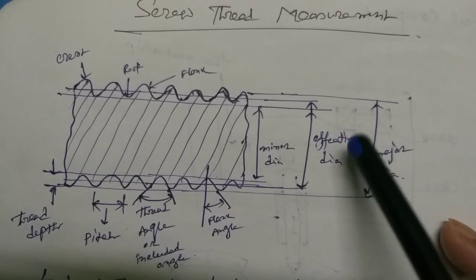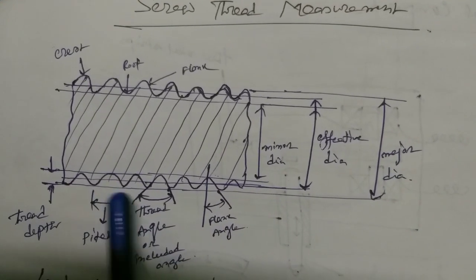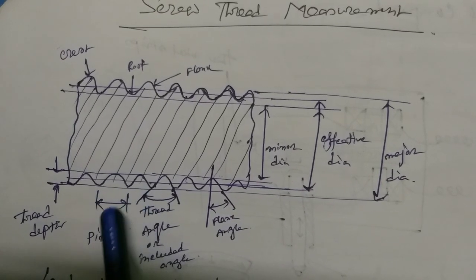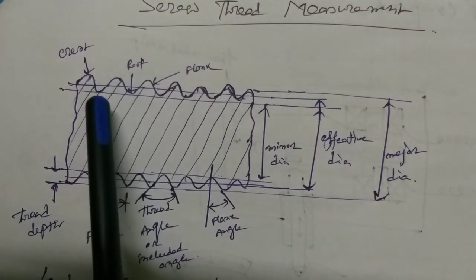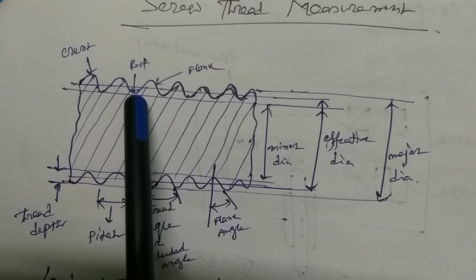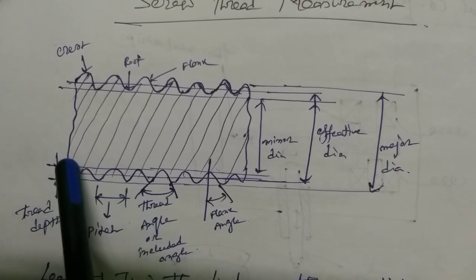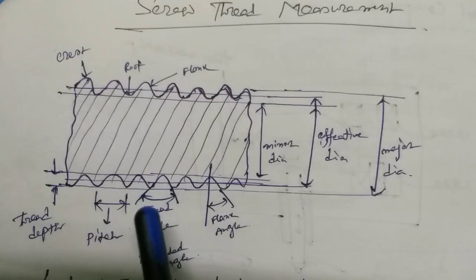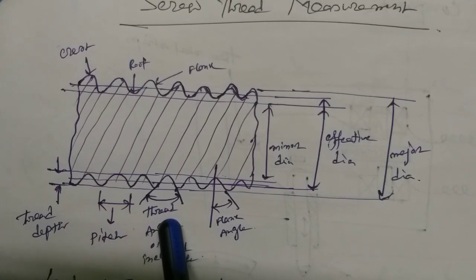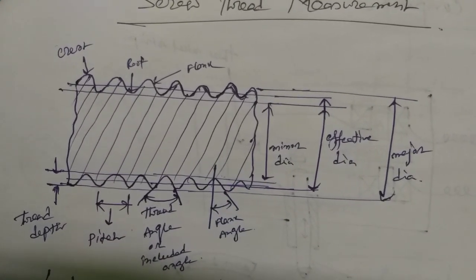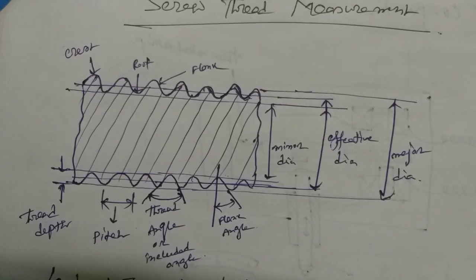The effective diameter lies between the minor diameter and the major diameter. The width of the crest and the width of the thread are also defined. The thread angle is very important — it is used to define and specify the thread. The flank angle is also defined. These are the whole terminology of a thread.